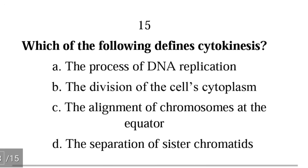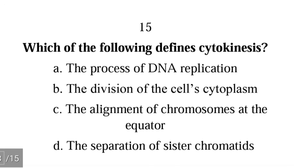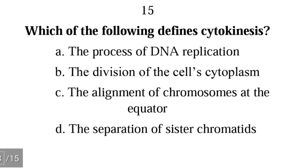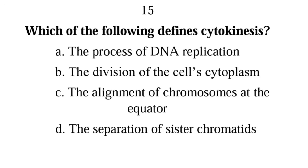Question 15: Which of the following defines cytokinesis? A) the process of DNA replication, B) the division of the cell's cytoplasm, C) the alignment of chromosomes at the equator, D) the separation of sister chromatids. The correct answer is B) — cytokinesis is simply the division of the cell's cytoplasm.